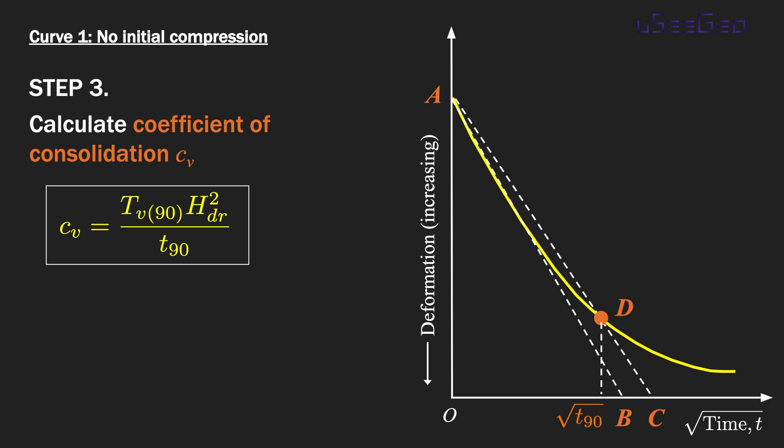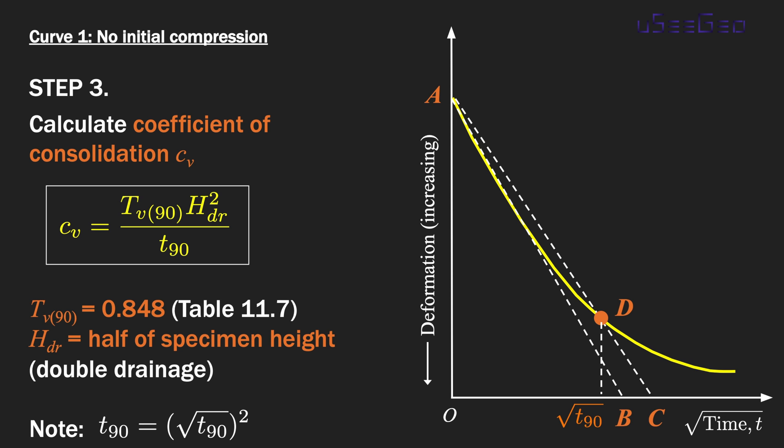To do that, we're going to use Terzaghi's solution. Using the definition of time factor T_v90, we can back-calculate c_v. Shown on this slide is the equation you can use to calculate c_v. In this equation, T_v90 is the time factor. From Terzaghi's solution table 11.7—that's the textbook we are using—this T_v90 is 0.848.